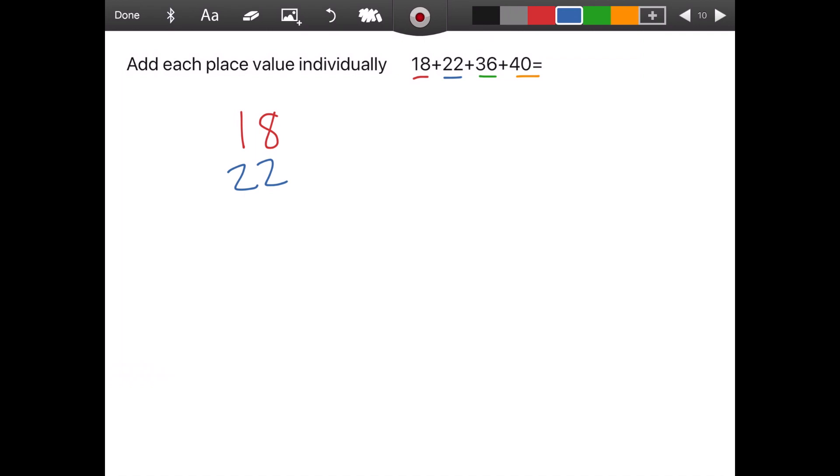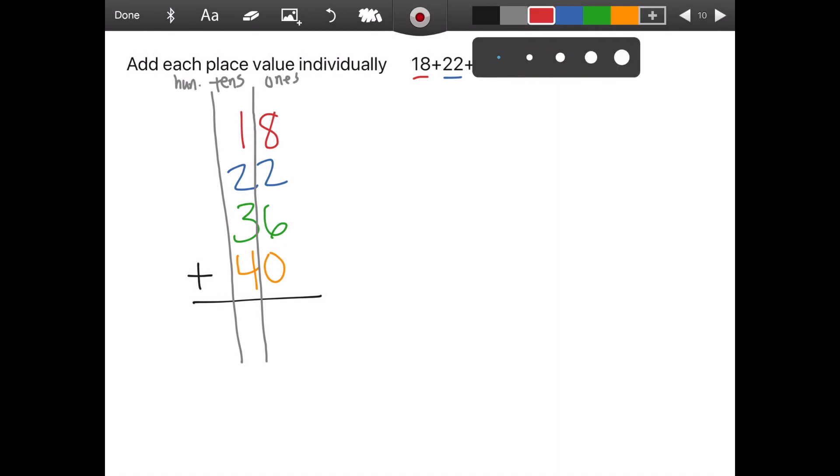So there's my 18 balloons, 22 blue balloons, 36 green balloons and 40 yellow balloons, my personal favorite. And then I'm going to draw a vertical line to kind of separate. Here's ones on one side, my tens on the other side. And I can even draw an additional line to represent the hundreds.